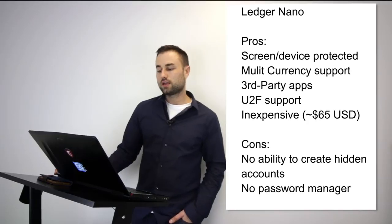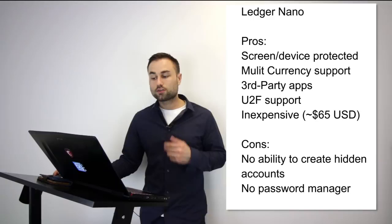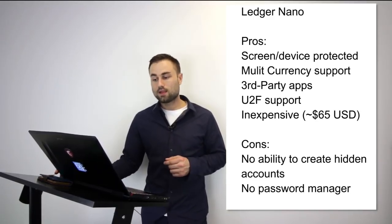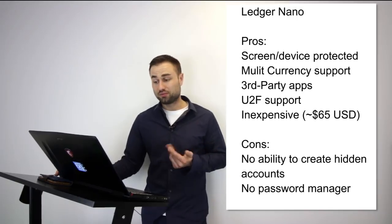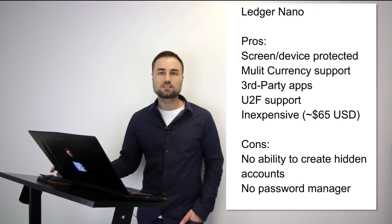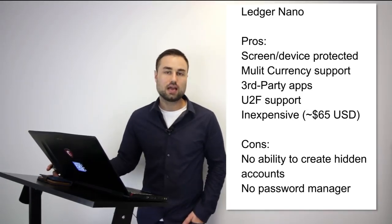The second hardware wallet is the Ledger Nano S, which I personally prefer. The technology between the Ledger and the Trezor is pretty much the same, but I prefer the Ledger experience. It has amazing feel, multi-currency support, third-party apps you can add or remove, and UTF support. It's quite cheap — only about $65 US. The cons: not as advanced as other hard wallets, no hidden accounts, and no password manager.